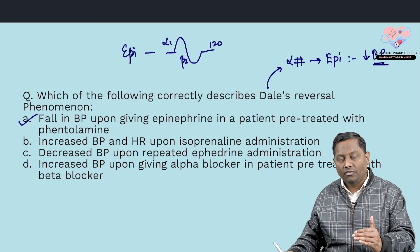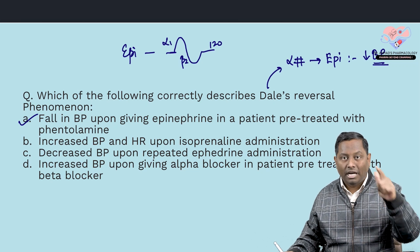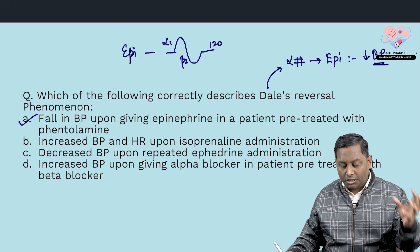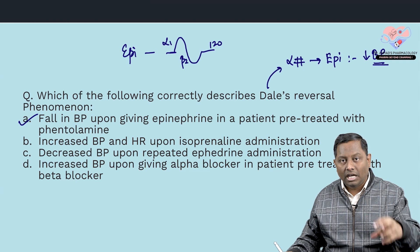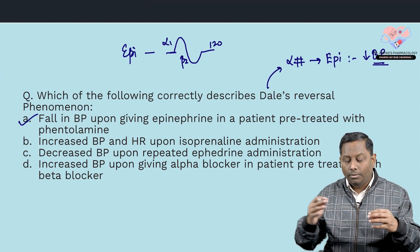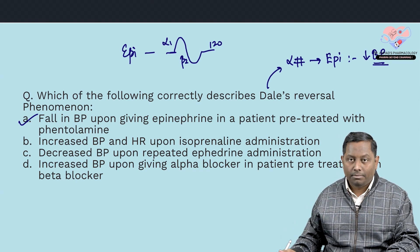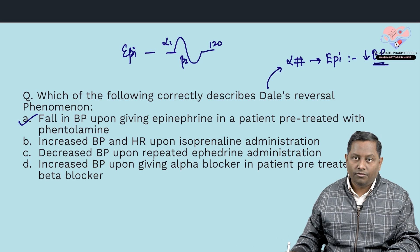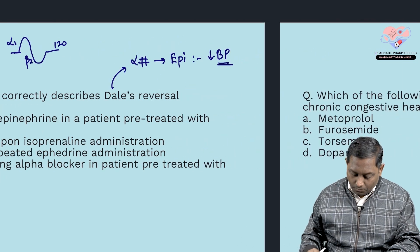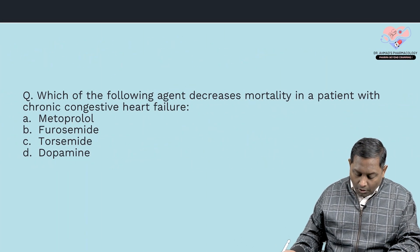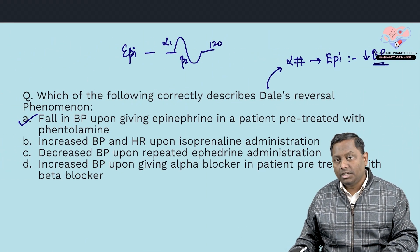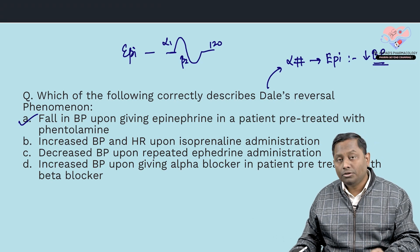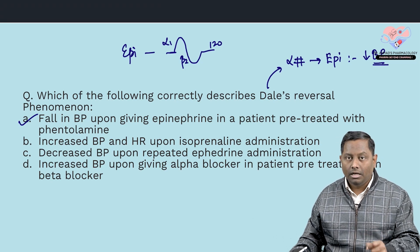Normally epinephrine has a biphasic response — increase then decrease. But if the patient is pre-treated with an alpha blocker, there will be only a fall in blood pressure. This phenomenon is called Dale's reversal. This concept is also used in the management of pheochromocytoma.